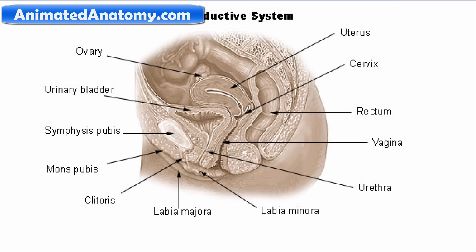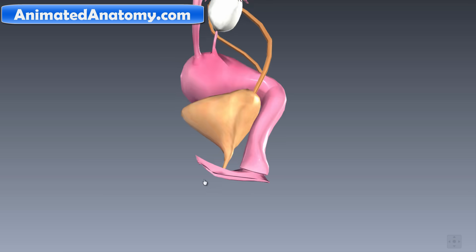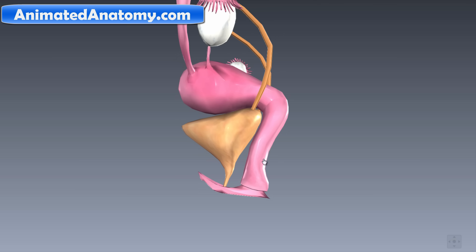Here we see everything in the sagittal section. We can see the labia minora and labia majora, the urethral opening, the urethra, and the bladder. Then here is the vaginal opening, the vagina, the cervix, and the uterus. The vagina goes behind the bladder, and the uterus goes over the bladder. The cervix is an important place because there are numerous cancers and sexually transmitted diseases associated with it.